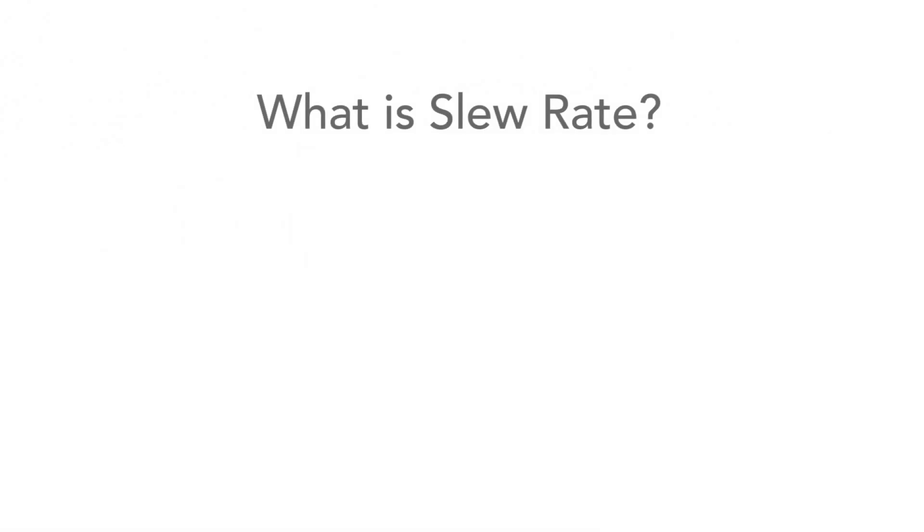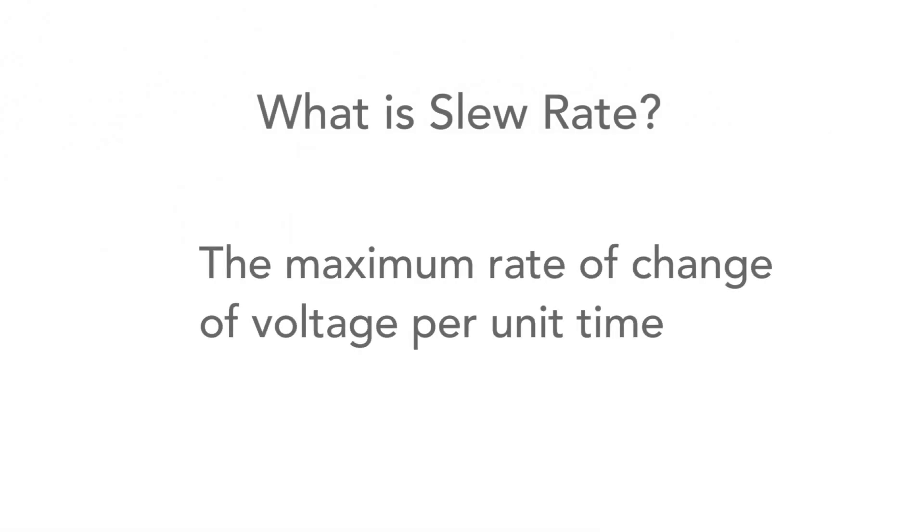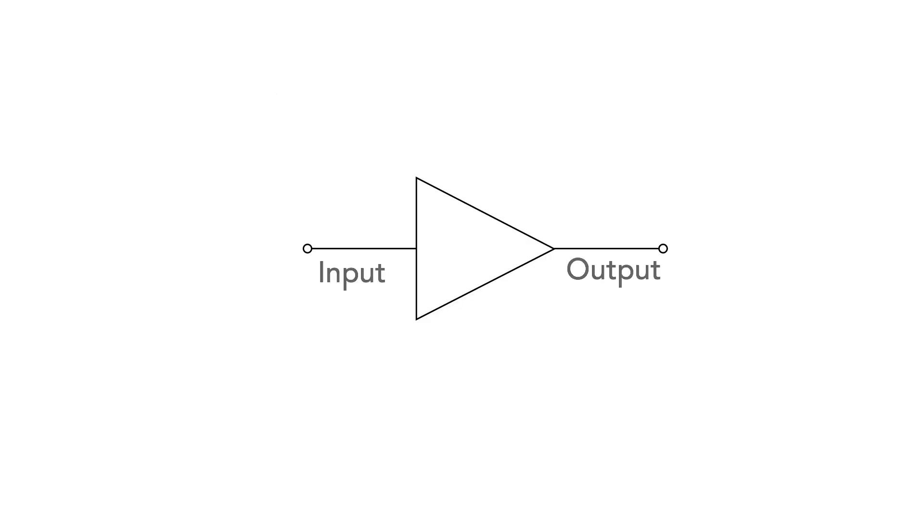So what is it? It's actually the ability of the amplifier to change its output voltage by a particular amount in a given time. For example, it may be required for an amplifier to follow an incoming waveform that might change very quickly and there may be a question over whether it will be able to do this or not.